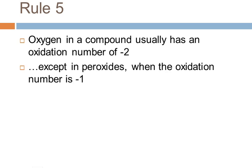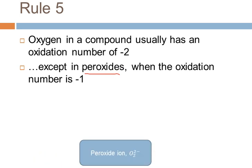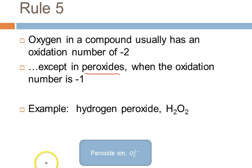There's one very important exception: the peroxides. In peroxides, the oxidation number of oxygen is minus one. In the peroxide ion, there are two oxygen atoms sharing an overall minus two charge, so each oxygen has a minus one. For example, in hydrogen peroxide, hydrogen is plus one as usual, but each oxygen in the peroxide ion is minus one.